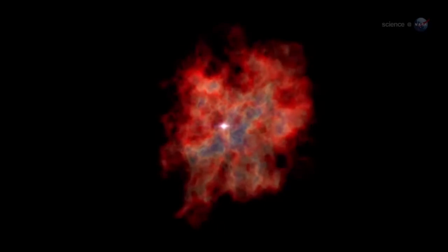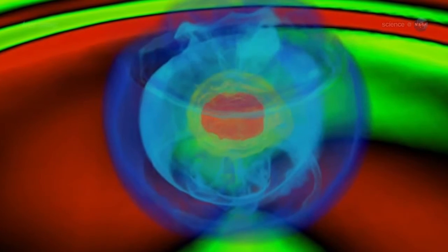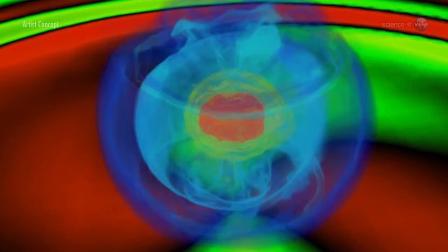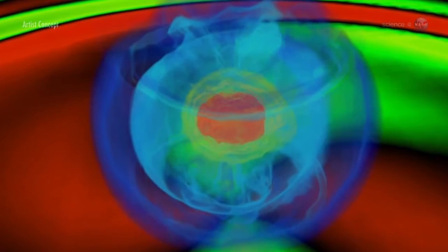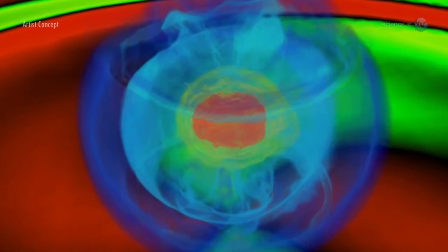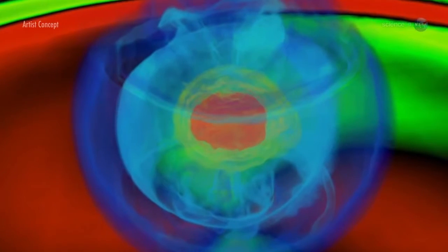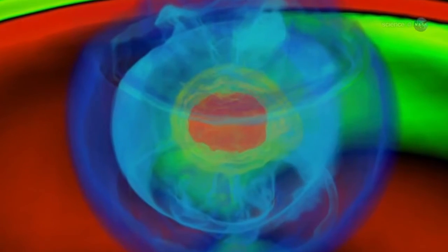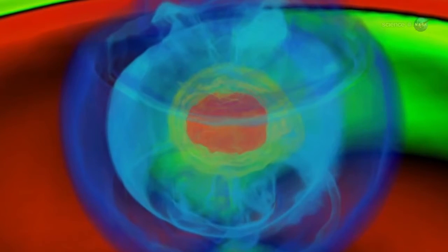We don't fully understand how supernovas of massive stars work yet, says Fiona Harrison, an astrophysicist at the California Institute of Technology. To figure out what's going on, scientists need to examine the inside of a real supernova while it's exploding. Not a particularly easy thing to do. So instead, they examine the remnant of the exploded star as soon after the explosion as possible.